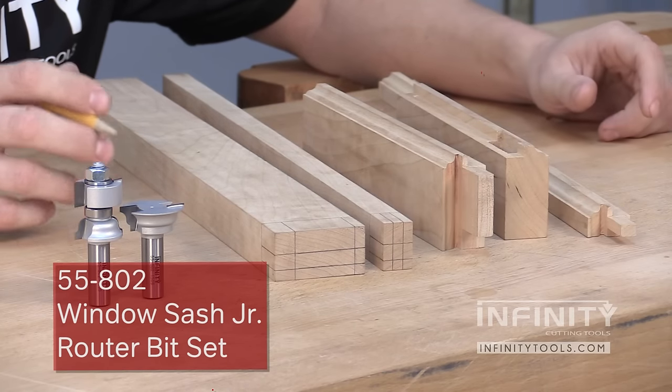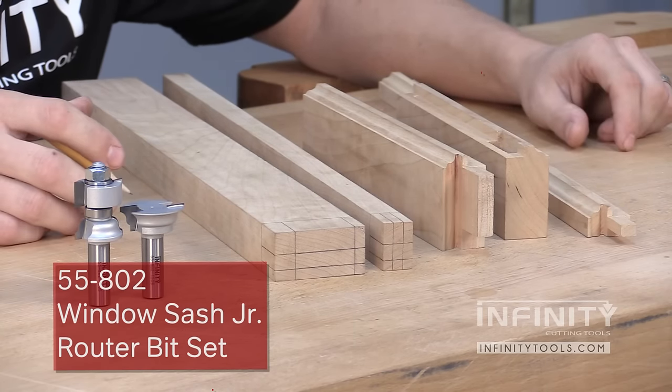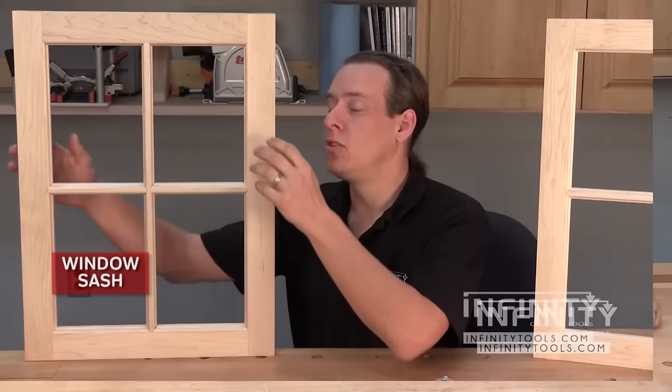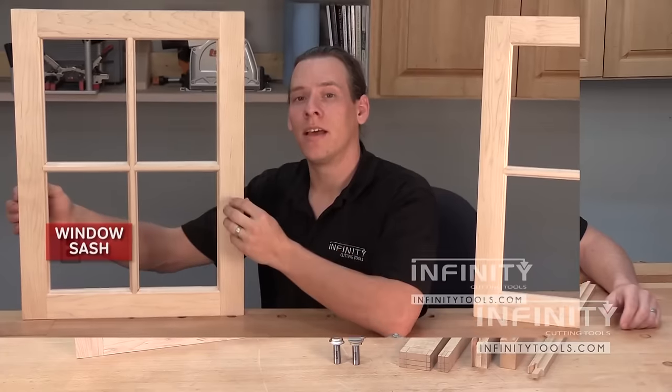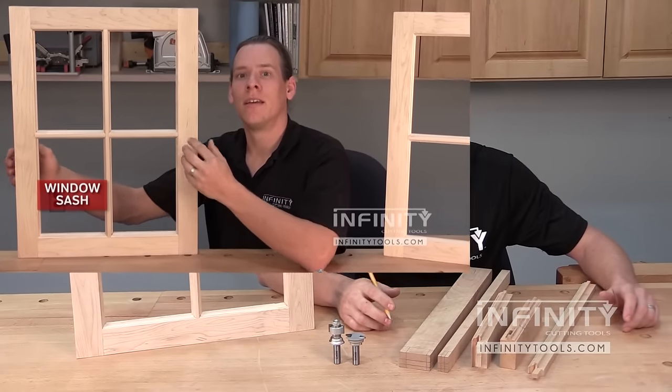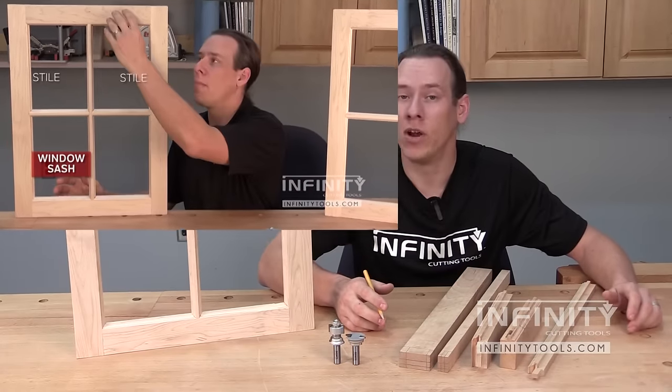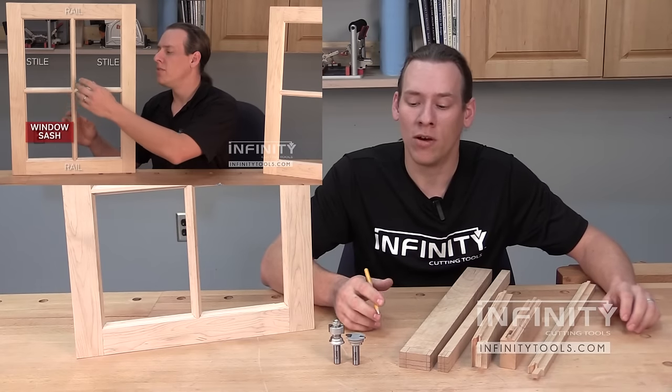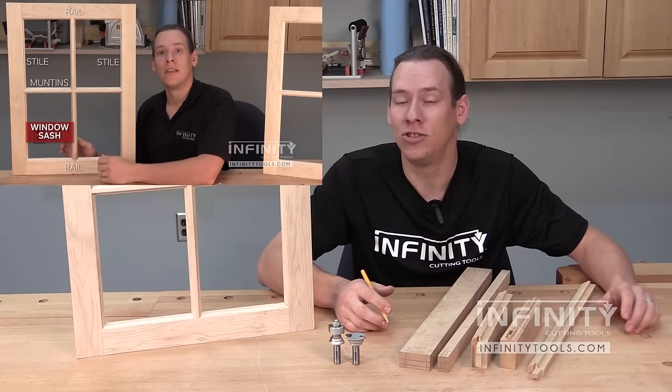This set is smaller than the standard Window Sash Router Bit Set that we used to make a window in How to Make a Window Sash Part 1. If you saw that video, you'll know the procedure that we used to make a window sash. And the same procedure can be used to make a window with the Window Sash Junior Set.